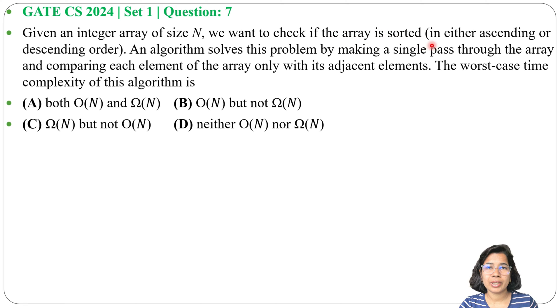It may be ascending or descending order. An algorithm solves this problem by making a single pass through an array and comparing each element of the array only with its adjacent element. The worst-case time complexity of this algorithm is, and four options are given.